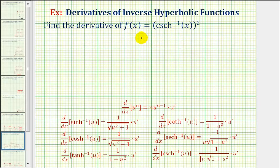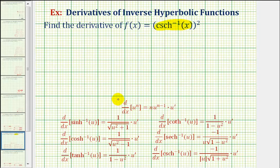When applying the chain rule, it's important that we recognize which function is the inner function and which function is the outer function. For our function, the inner function is the inverse hyperbolic cosecant function, and the outer function is the squaring function. This means we'll have to apply the general power rule given here.